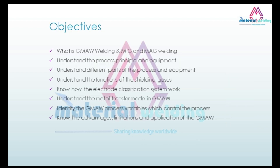Today's topic is gas metal arc welding, which is also called MIG or MAG welding. After completing this lesson, you will be able to: understand what GMAW, MIG, and MAG welding are; understand the process principle and equipment; understand different parts of the process and equipment; understand the functions of the shielding gases; know how the electrode classification system works; understand the metal transfer modes in GMAW; identify the GMAW process variables which control the process; and know the advantages, limitations, and application of GMAW.